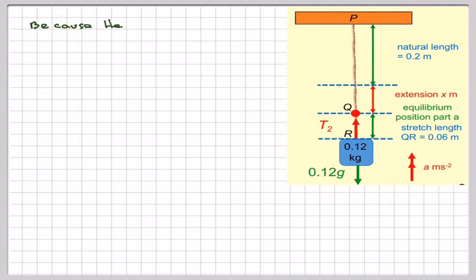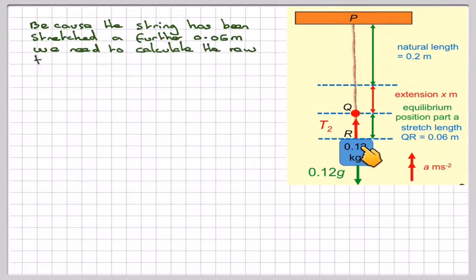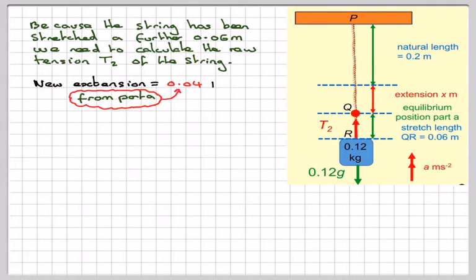Right, in part B, it's now been pulled down to this point here. The string has been further stretched, it's been stretched at 0.06 meters, so the stretch is now, the extension is now X, which is 0.04, plus 0.06. So, the new extension is 0.04, plus the further bit that I pull it down, 0.06. This is the initial extension, if I just let it be in equilibrium, then I have to pull it further, 0.06. That's equal to 0.1 meters.